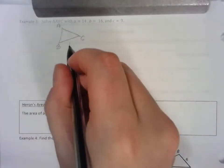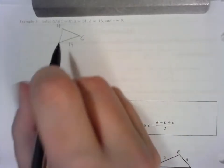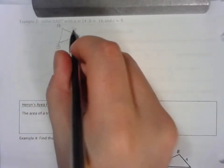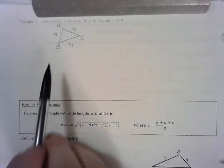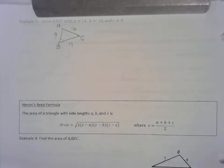Let's label everything with the information that's given. This is 14, this would be 16, and this would be 9. The last page says we want to go from longest side to largest angle on down.